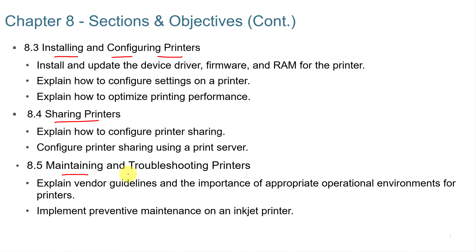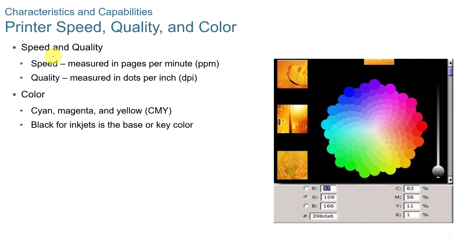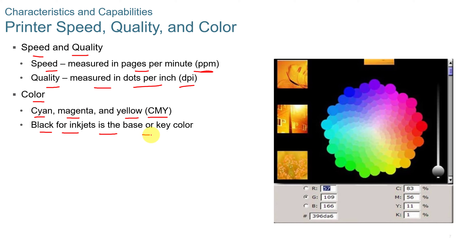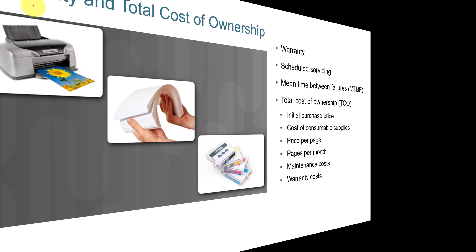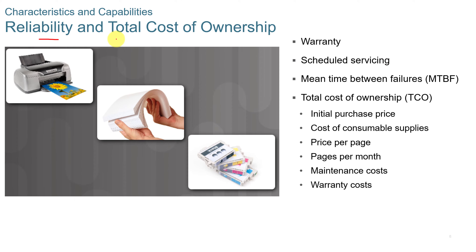Common printer features. Some of the things you'll see with printers are different characteristics — speed and quality. Speed can be measured in pages per minute and quality is measured in dots per inch, or DPI. If you have a color printer, it comes in cyan, magenta, and yellow, or CMY, with black as the base or key color for inkjet. You also have to look at reliability and total cost of ownership, or TCO.